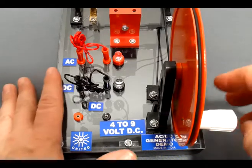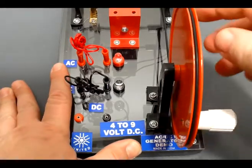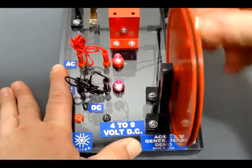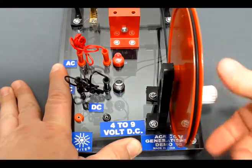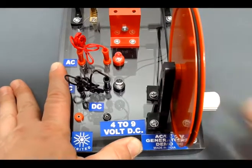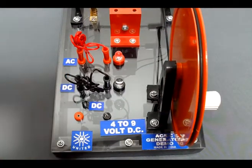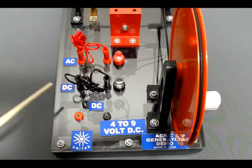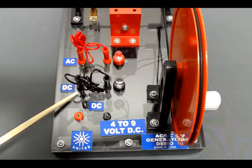What students will notice is when they spin the arm one way, both bulbs light up. But if they spin it in the opposite direction, only the AC bulb lights up properly because the current's not going in the proper direction for the DC bulb.